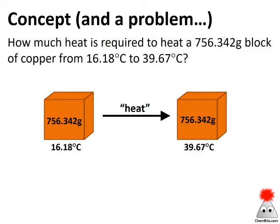Let's look at a specific problem. How much heat is required to heat a 756.342-gram block of copper from 16.18°C to 39.67°C? We have a change in temperature and we know how much material we're working with, but we need a heat capacity — a relationship between heat and temperature.